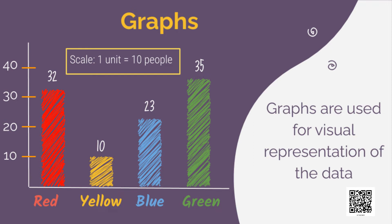Can you tell the difference between the first highest and the second highest choices? Yes, it is 35 minus 32, which is 3. Similarly, the difference between the highest choice and the lowest choice is 35 minus 10, which is 25. You can also add up all these numbers to know the number of students in this group.